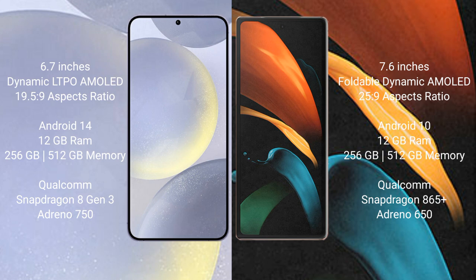The Samsung Galaxy Z Fold 2 comes with 12GB RAM and 256GB or 512GB internal storage, a Qualcomm Snapdragon 865 Plus processor, and Adreno 650 GPU.